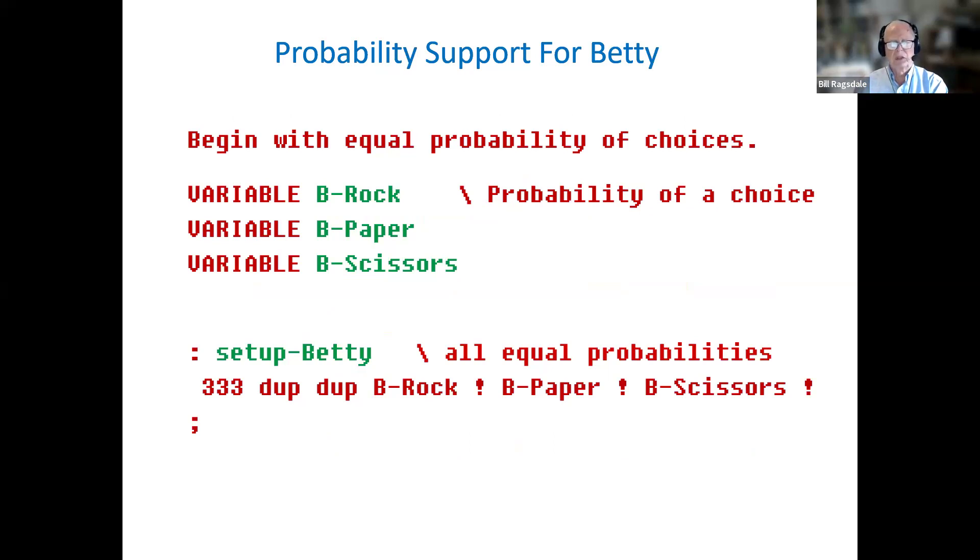This is the probability set up for Betty. The B rock is the probability of Betty playing a rock. The B paper is the probability of Betty playing paper. And B scissors is her probability of playing scissors. And in this case, everything is done over 1,000, a base value of 1,000, which represents unity. So we will put in 333 for each of Betty's probabilities. So she will play equal strategy to begin with.